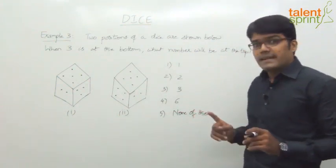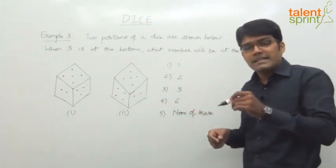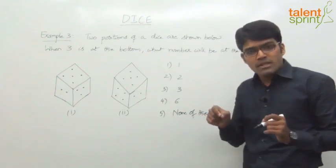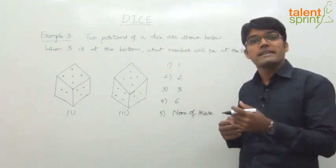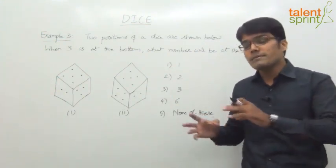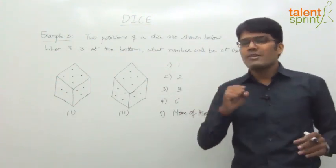Now the point here is, like I said, the method that we have discussed, writing numbers in the clockwise direction from a common number and then finding out opposite is very easy. But that is applicable only when both the dice have got only one common number.